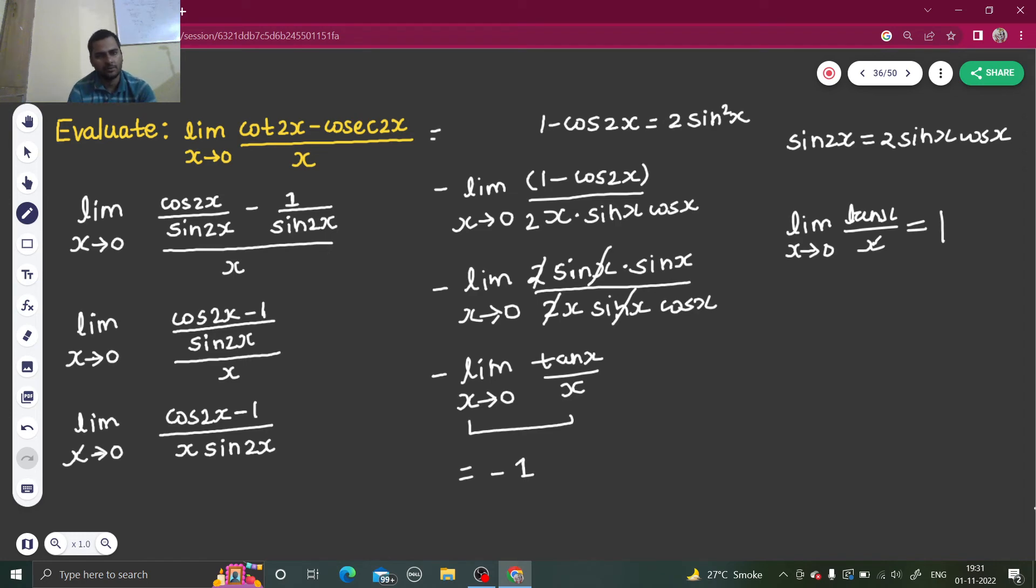So this is equal to minus 1. Again, to summarize this question: just convert if you have cot, if you have cosec, just try to simplify things up. Use formulas, whatever formulas you know in trigonometry, try to utilize them all. So first formula, cot is cos by sine and cosec is 1 by sine. Further simplified, and I realized that 1 minus cos 2x is 2 sine squared x, so I used that also. Sine 2x is 2 sine x cos x, I used that also. I simplified sine by cos as tan. Finally, limit x tending to 0, tan x by x is 1, and a negative sign was there outside, so minus 1 is my final answer. So I think this question was not difficult at least.